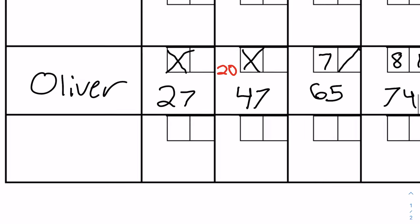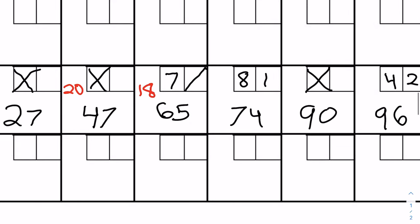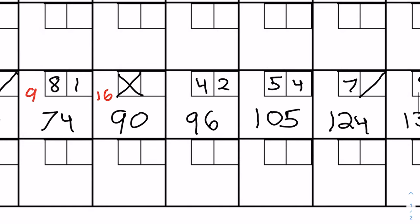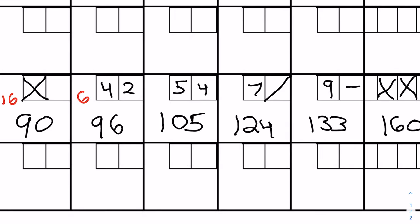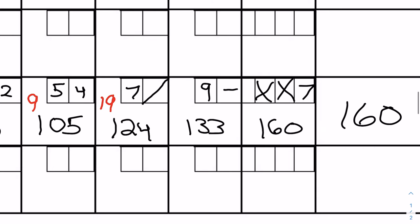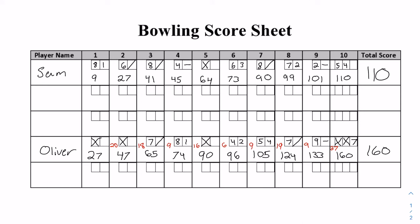Going back, the red numbers show all the individual additions made each frame. For Oliver's sheet: 18, then 9, then 16, then 6, then 9, then 19, then 9, and finally 27 for the last frame. Showing the full score sheet, those red numbers display all the different additions made per frame. You can see Oliver's full 10 frames and Sam's full 10 frames, and how those strikes and spares with their bonus points help build your score up.